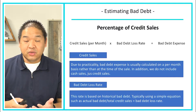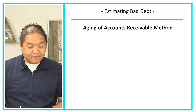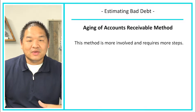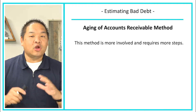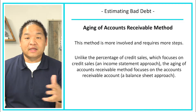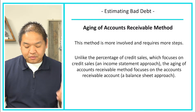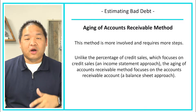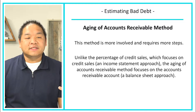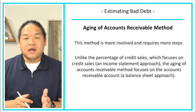The other method for estimating bad debt is the aging of accounts receivable. This method is more involved and requires more steps, but once you understand them it's straightforward — it just takes a little time to set up. Unlike the percentage of credit sales, which is an income statement approach, the AR aging method focuses on the accounts receivable account — the balance sheet approach. We look at what the accounts receivable balance actually is and create an estimate based on that.